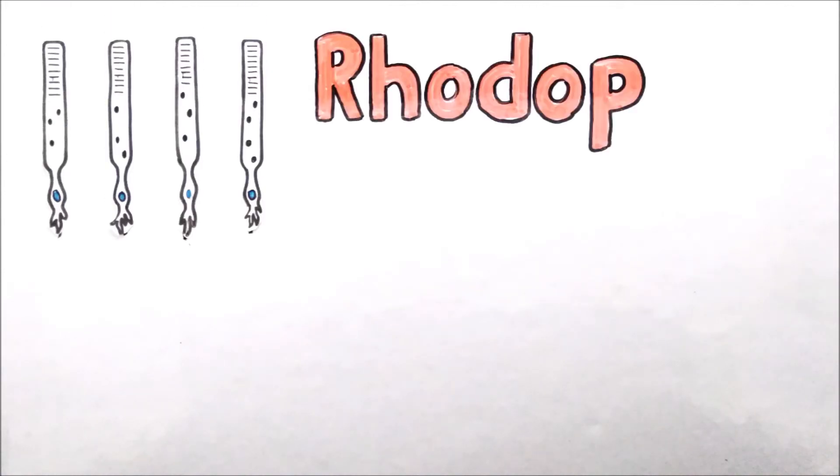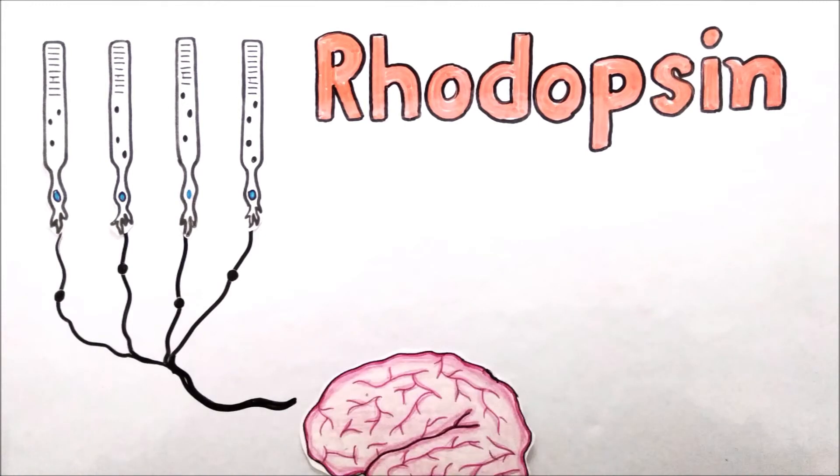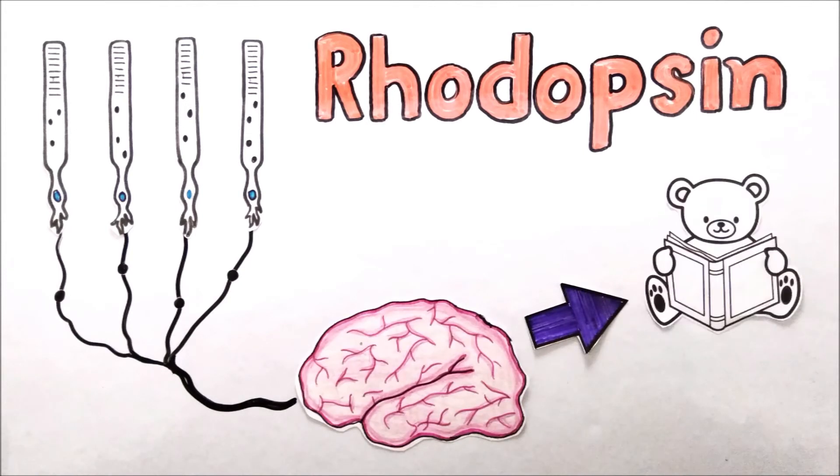The rods also have a photosensitive pigment called rhodopsin, which plays a vital role in night vision. Many rods are wired to a single brain-connected nerve in these animals, which also helps in creation of stronger and better picture.